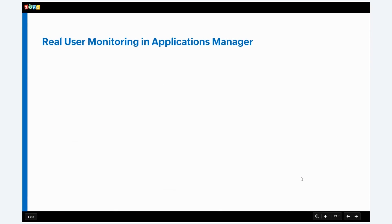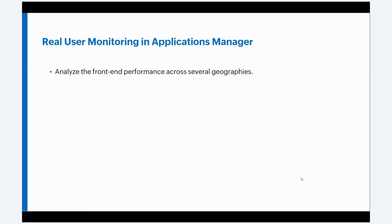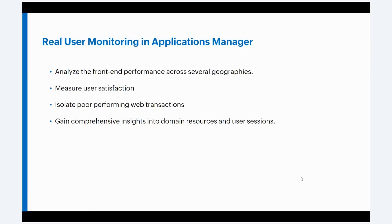So what does real user monitoring in Applications Manager help you do? It helps you analyze front-end performance across several geographies. It can also help you analyze performance across ISPs, browsers, and devices to ensure hassle-free digital experiences. It also helps you measure user satisfaction using Apdex scores. It helps you isolate web transactions that contribute to poor user experiences, gain comprehensive insights about domain resources and user sessions, identify JavaScript errors instantly to prevent users from reporting service errors, and analyze the impact of any new changes made to the site on user experience.